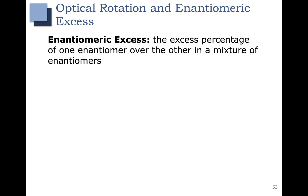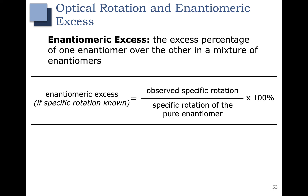The term enantiomeric excess refers to the excess percentage of one enantiomer over the other. This term is a little bit confusing because it does not refer to relative amounts of enantiomers, but rather the excess of one enantiomer over the other. You can calculate enantiomeric excess based on your observed specific rotation: if we know the specific rotation of the pure enantiomer, we measure the observed specific rotation of the mixture, divide by the specific rotation of the pure enantiomer, and multiply by 100%.